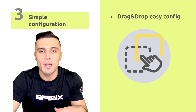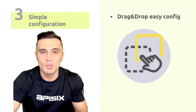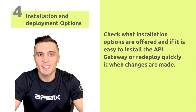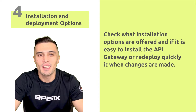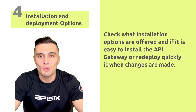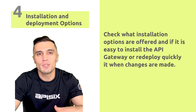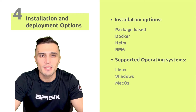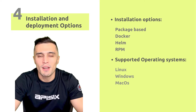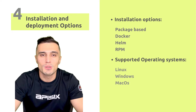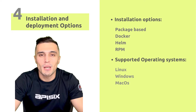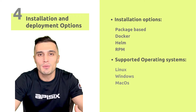Installation and deployment options are another point to consider. Check how difficult it is to install the API Gateway and redeploy when changes are made. Most modern API gateways can be installed in many different ways — package-based, Docker, Helm, RPM — and in any environment like Linux, Windows, or macOS. One of the biggest advantages of Kong is the wide range of installation choices, including pre-made containers such as Docker and Vagrant, so you can get deployment running quickly.